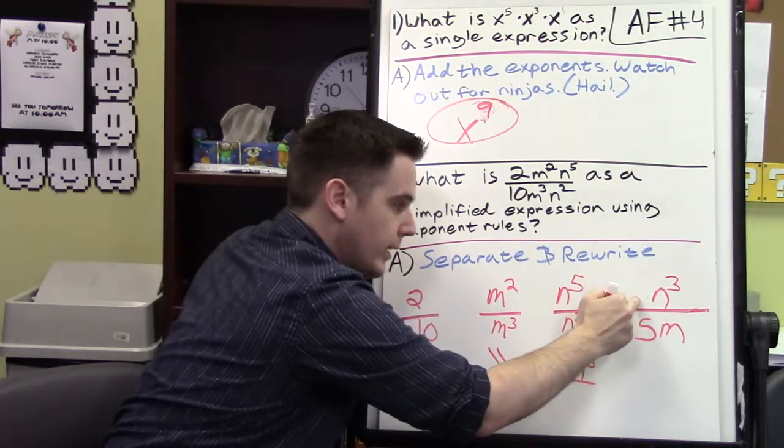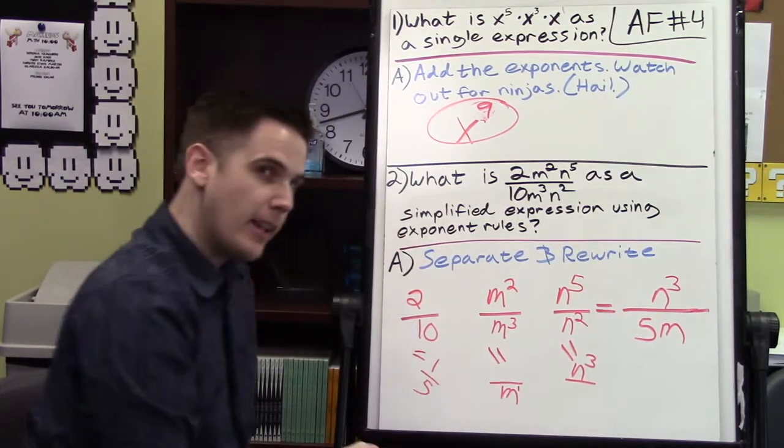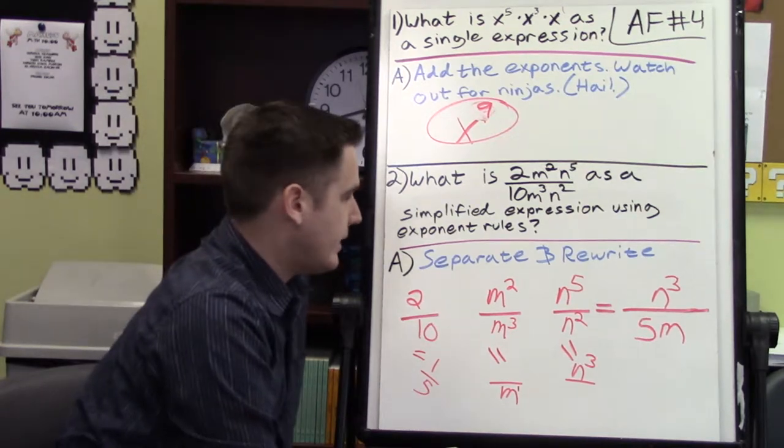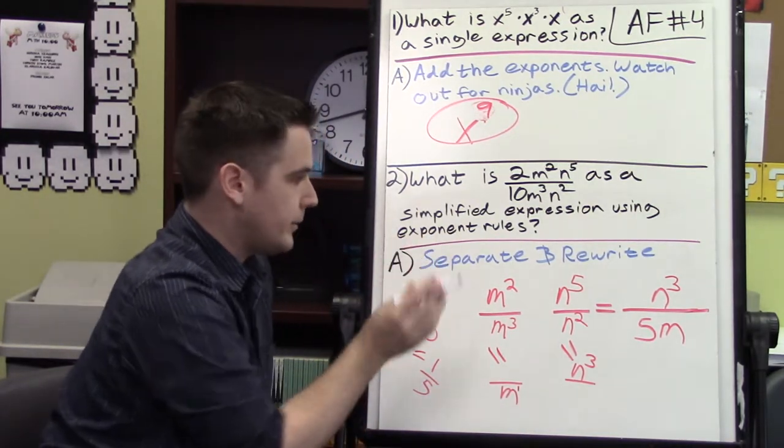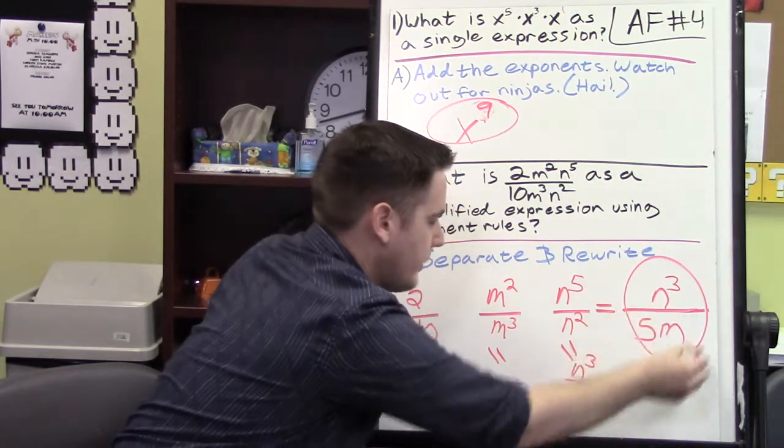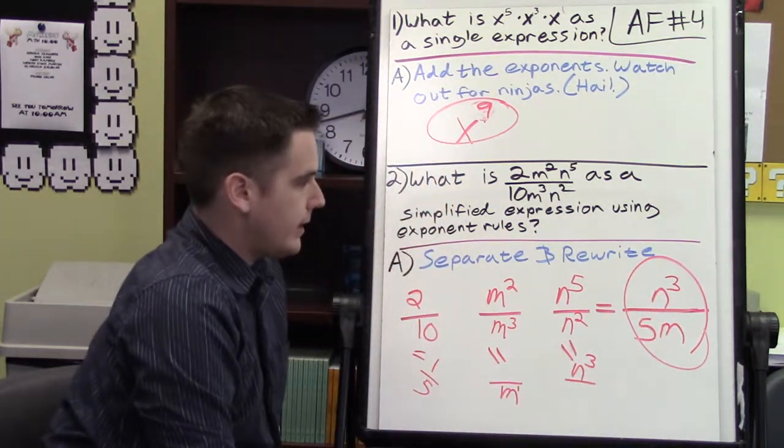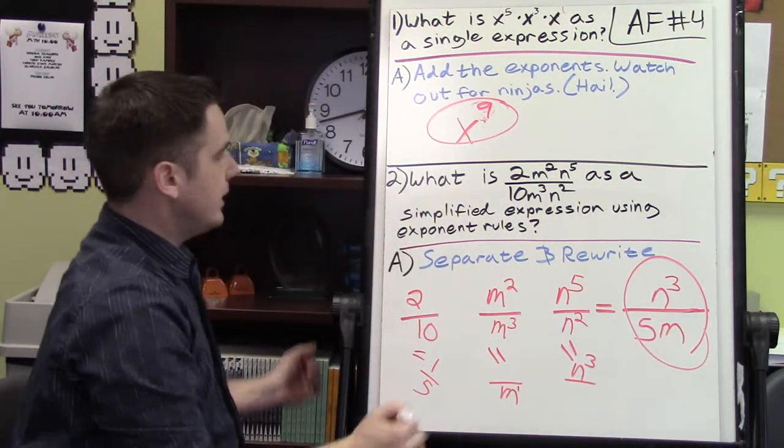You can get rid of the ninja one, it will go back into hiding to strike you again later. And that's it, simplified. There's no more things we can simplify than we've already done, so then that is the answer. Next problem.